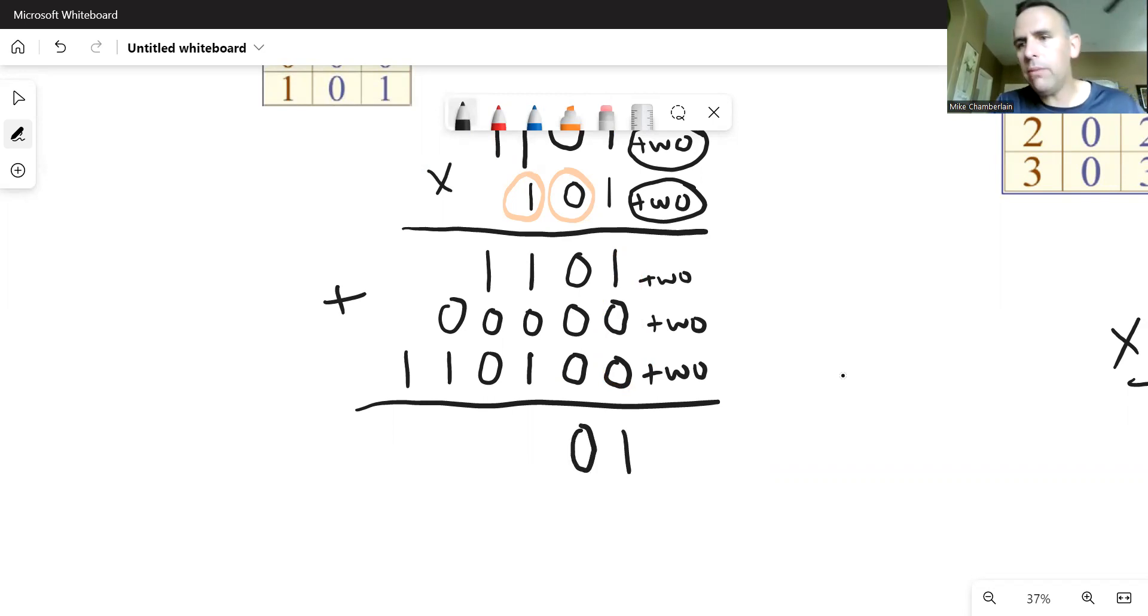And then one plus zero plus one. It's tempting to write two, but remember there is no two in base two. So it's one and one more. The next number is one, zero. Remember the counting is one, zero, one, one, one, zero, one, one, zero, one, and so on.